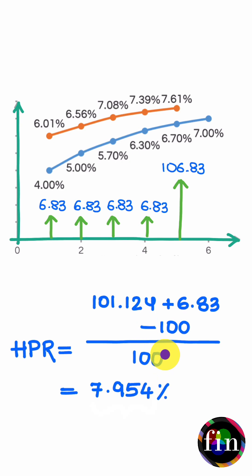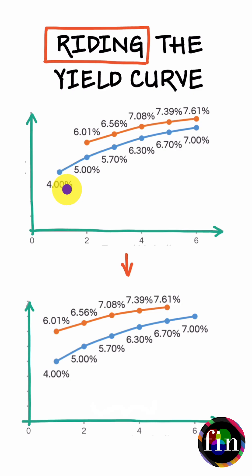This is riding the yield curve at work. Essentially, we started with an upward sloping term structure which prices in higher interest rates in the future. If at the end of the period we do not encounter the priced-in term structure of spot rates, but rather the same term structure or relatively the same term structure that we started with,